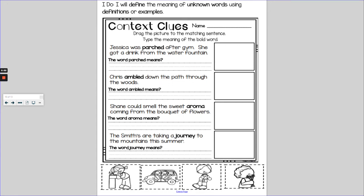All right, third graders, we're going to define the meaning of unknown words using definitions or examples. Here we are going to drag the picture to the matching sentence and then type the meaning of the bold word. I'm doing this on the computer, you will be doing this on paper, but you'll still be able to understand the expectation of your classwork by watching what I do today.